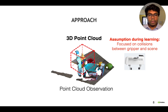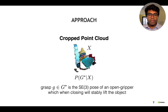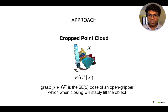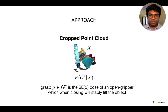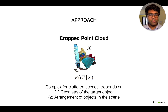We're going to put a 3D bounding box centered on the target object, and this bounding box is approximately the size of the gripper. From this, we get a cropped point cloud, which I'll call observation X — this is going to be an input to many of the modules going forward. Our goal is to reconstruct the distribution G*, which is the space of all successful grasps. The grasp is defined as an SE(3) pose of an open gripper which, when closing, will stably lift the object. This distribution is extremely complex for cluttered scenes; it's discontinuous and depends on both the geometry of the target object and the arrangement of objects in the scene.